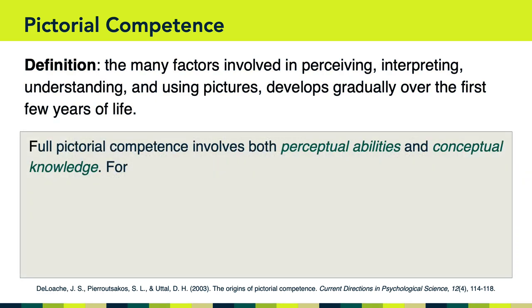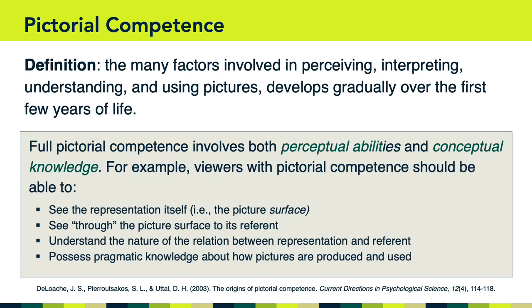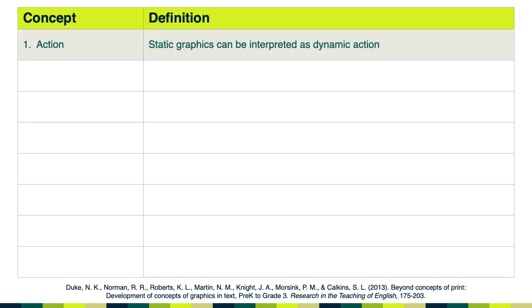Full pictorial competence involves both perceptual abilities and conceptual knowledge. Here are some of the skills and knowledge that are part of this concept of pictorial competence. On one level, this is so basic to our modern existence, we tend to forget that humans need to develop this kind of competence when they're born. I wanted to share that in order to lead us to the concepts about graphics that children learn as they are exposed to different visual representations. In fact, researchers have identified eight different concepts that children must learn related to visual representations. One of those concepts is related to action — the idea that static graphics can sometimes show dynamic action. In other words, one of the things static graphics can show is movement, even though the image itself is not moving.